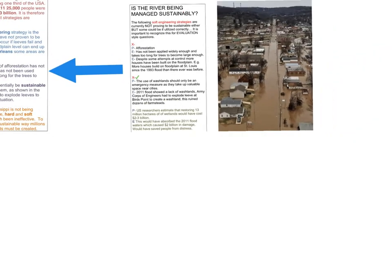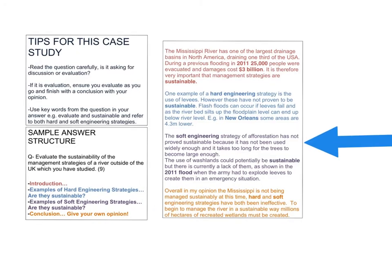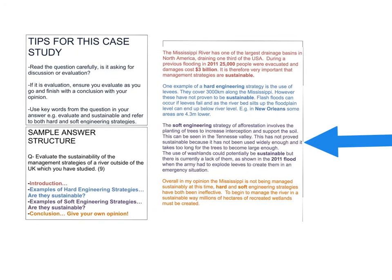Looking at a past paper question: evaluate the sustainability of the management strategies of a river outside of the UK which you have studied. Key points are: evaluate means we need positives and negatives; focus on the sustainability of the strategies; and it must be outside the UK, so do not write about Somerset. We're going to break this into four key areas: introduction, examples of hard engineering strategies and are they sustainable, examples of soft engineering strategies and are they sustainable, and then your conclusion.